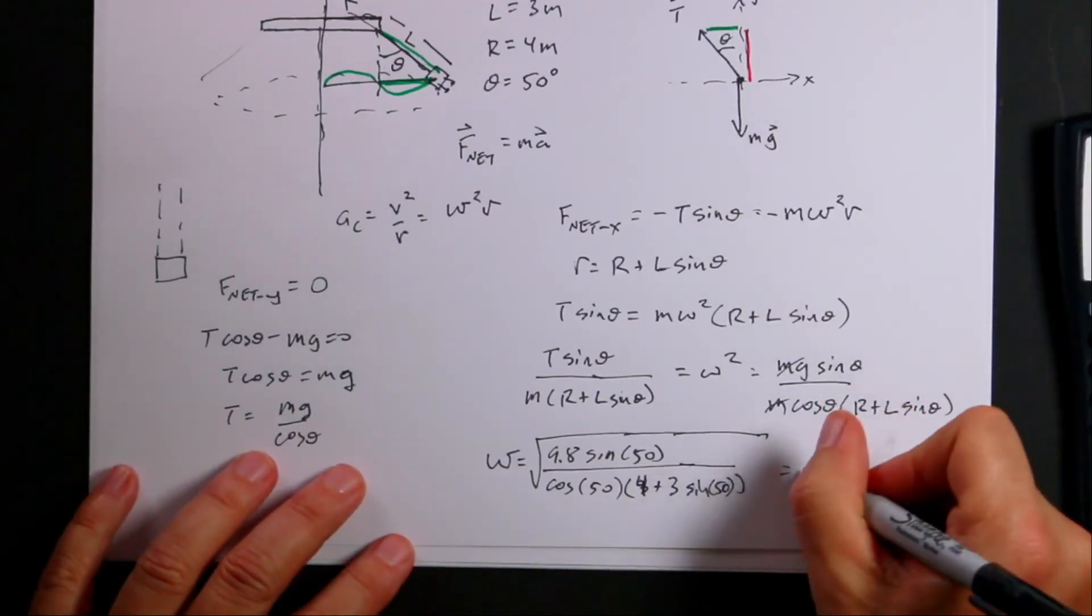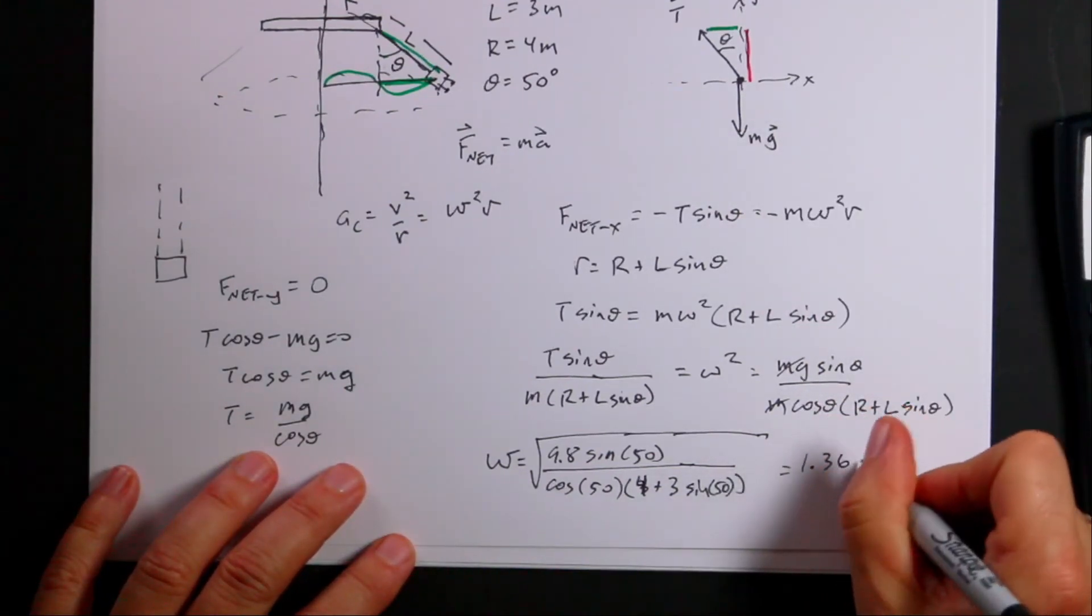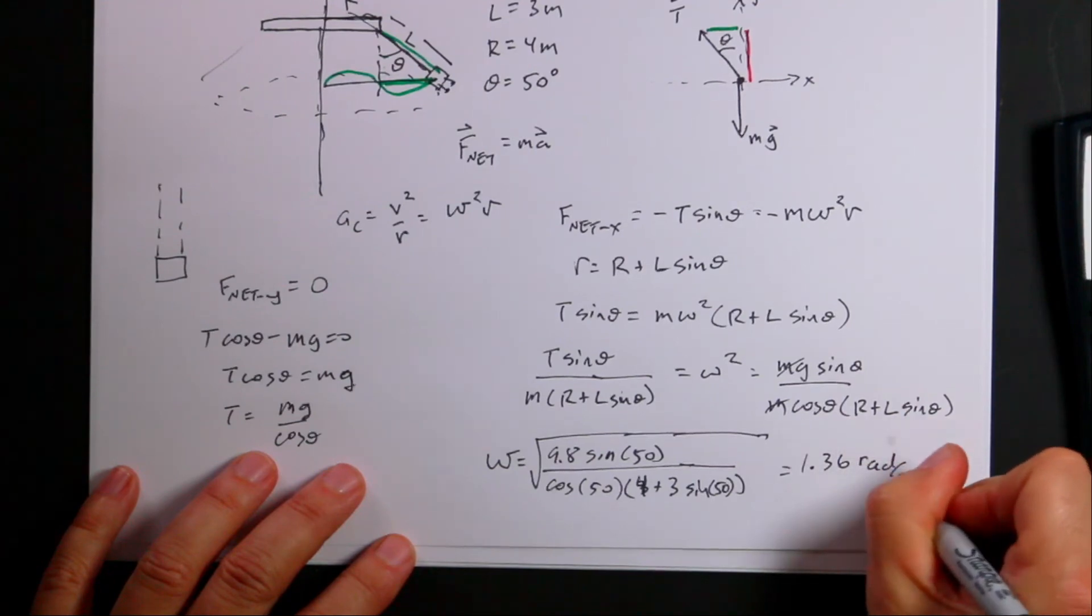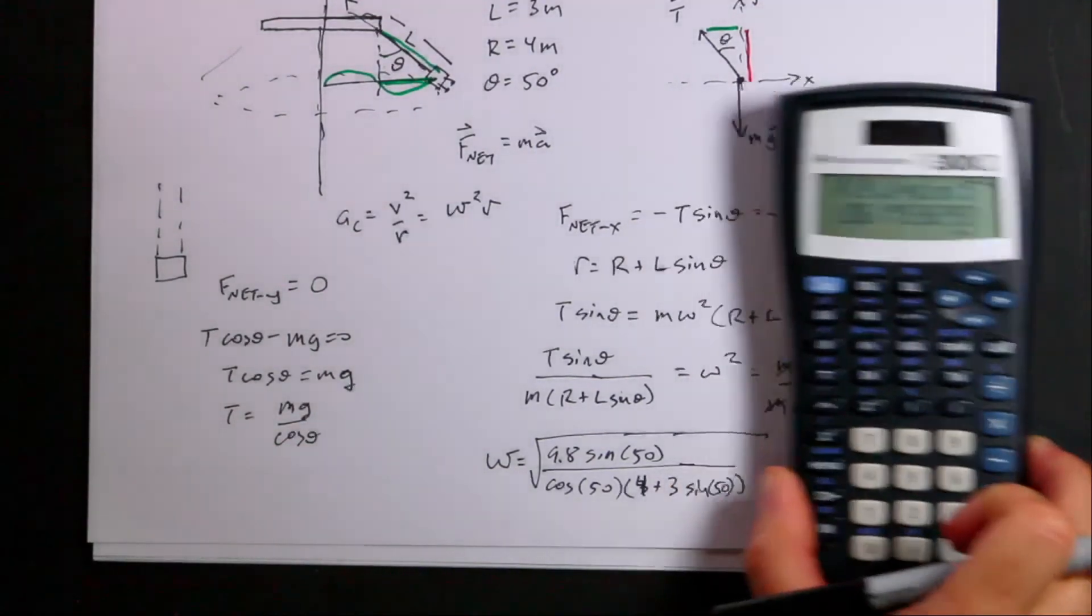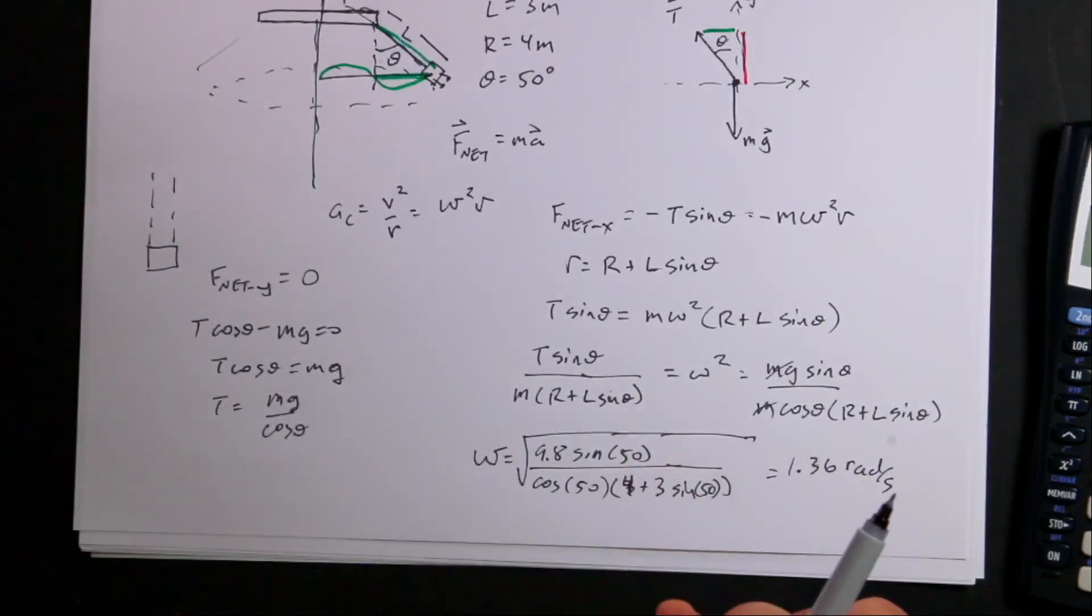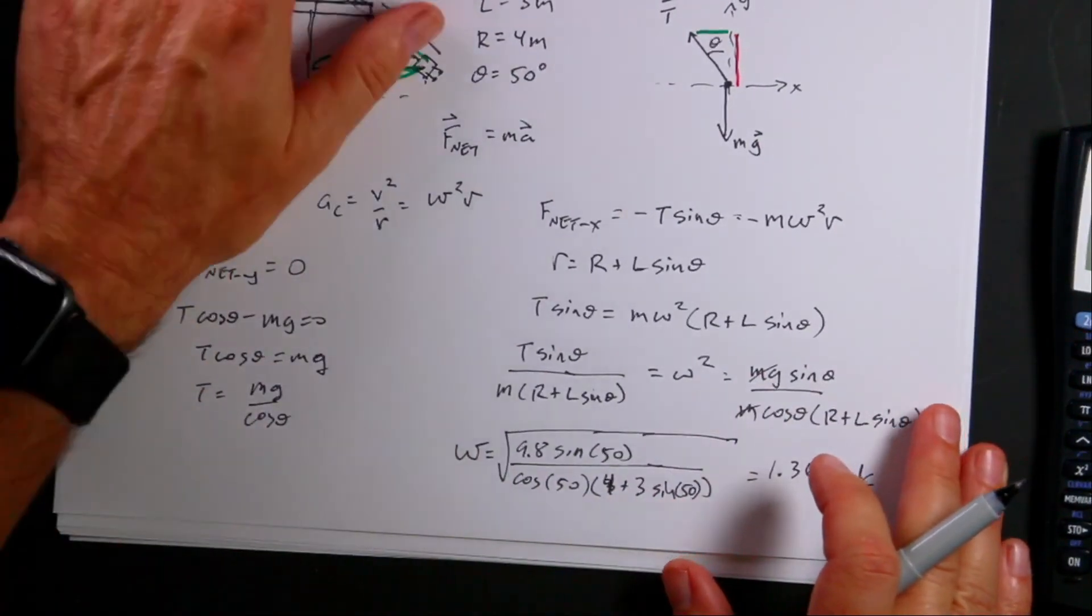1.36 radians per second. I think that's right. Honestly don't trust this calculator, so if you get a different number, that's cool. I believe you.